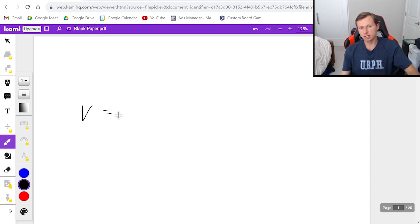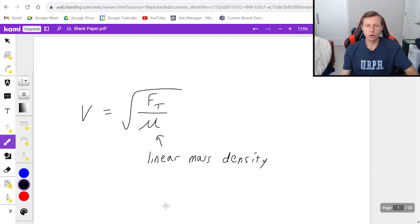The velocity of the wave is going to equal the square root of the tension force, which I call F_T in the string, divided by Greek letter μ, or that is known as the linear mass density, and it has its own equation μ equals mass over length, where L is the length of the string, m is the mass of the string.